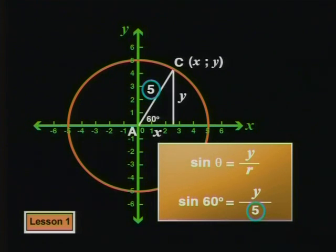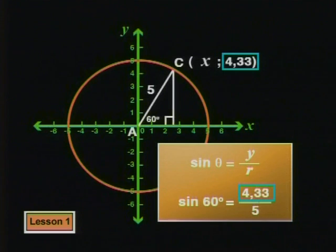We can draw in a line perpendicular to the x-axis, like this. That gives us a new right-angled triangle. This perpendicular distance is the same as the y-coordinate of our point C. So that's 4.33.